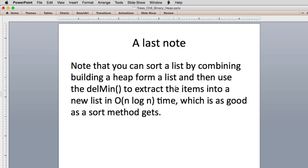And just a last note, you can actually sort a list using a priority heap like this, a bin heap. And you do it by inserting everything in the list. And then you'd call delete min to pull it out one at a time and build a new list. And you could sort using n log n time. So that's as good as a sort method will get.